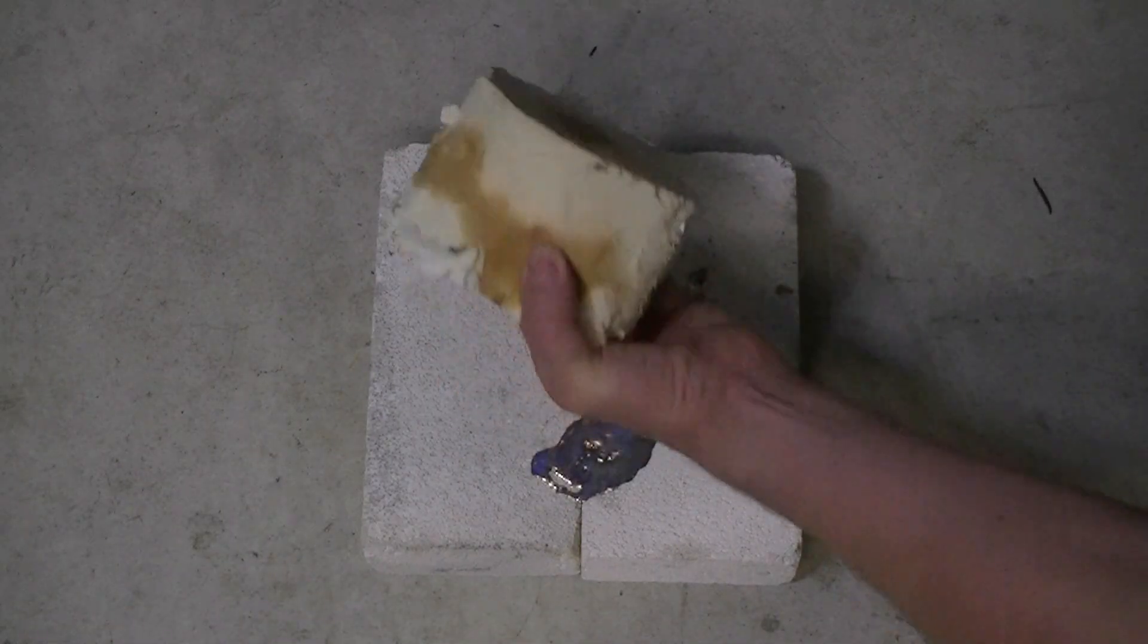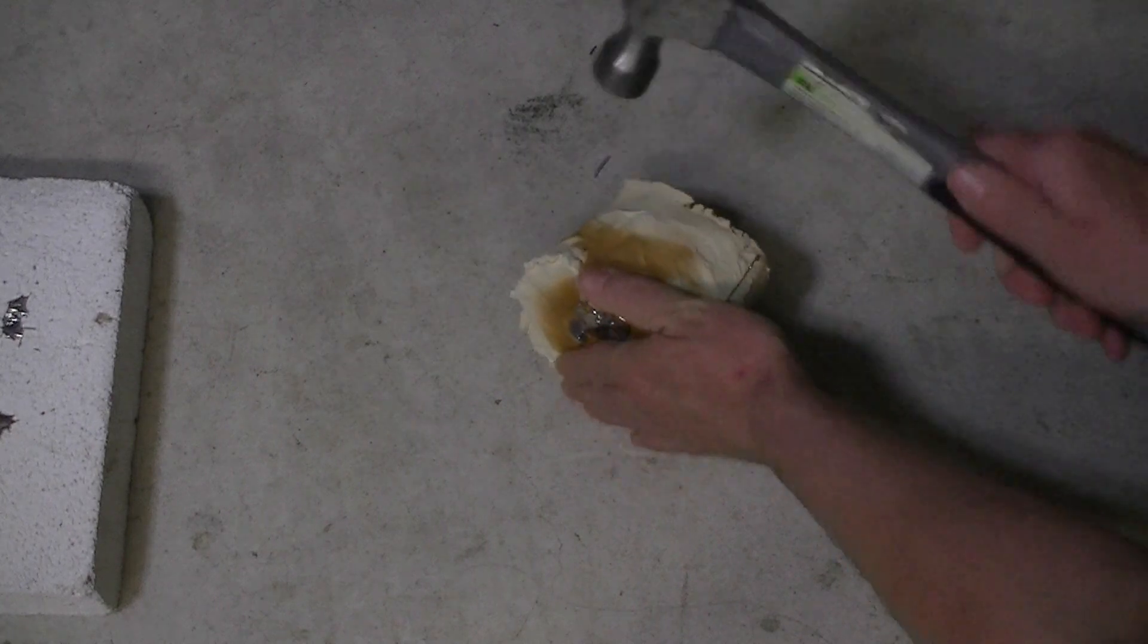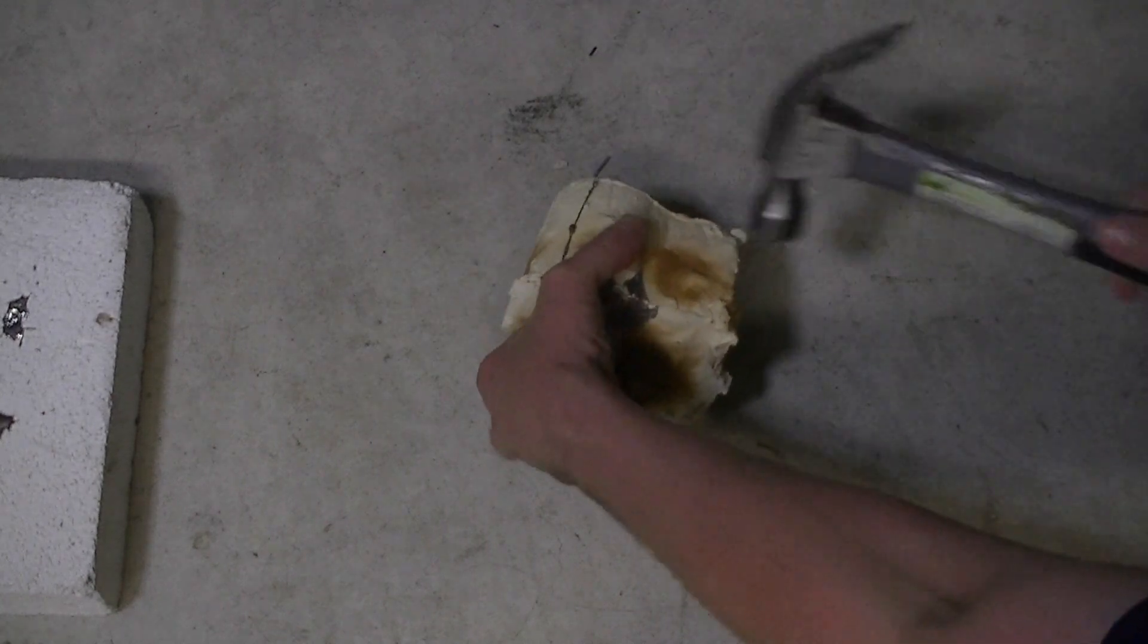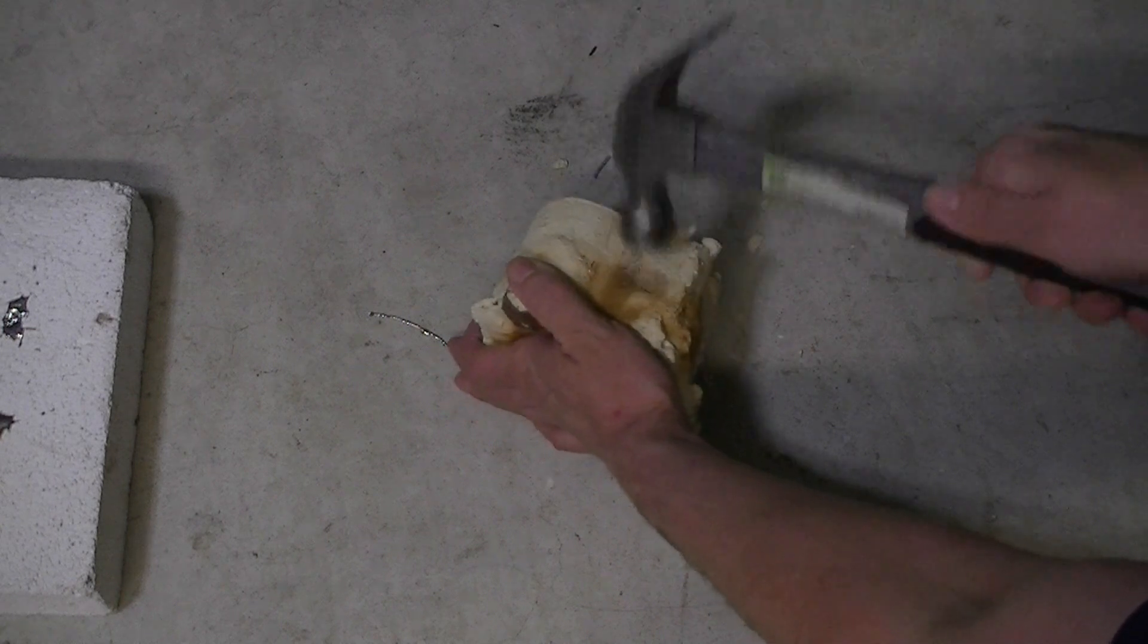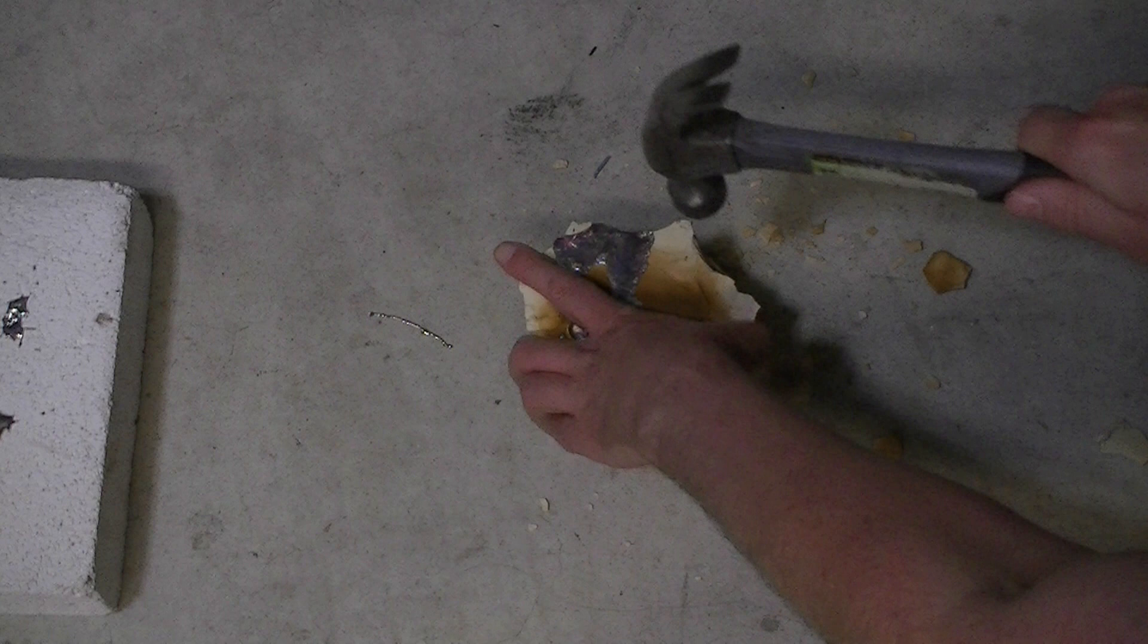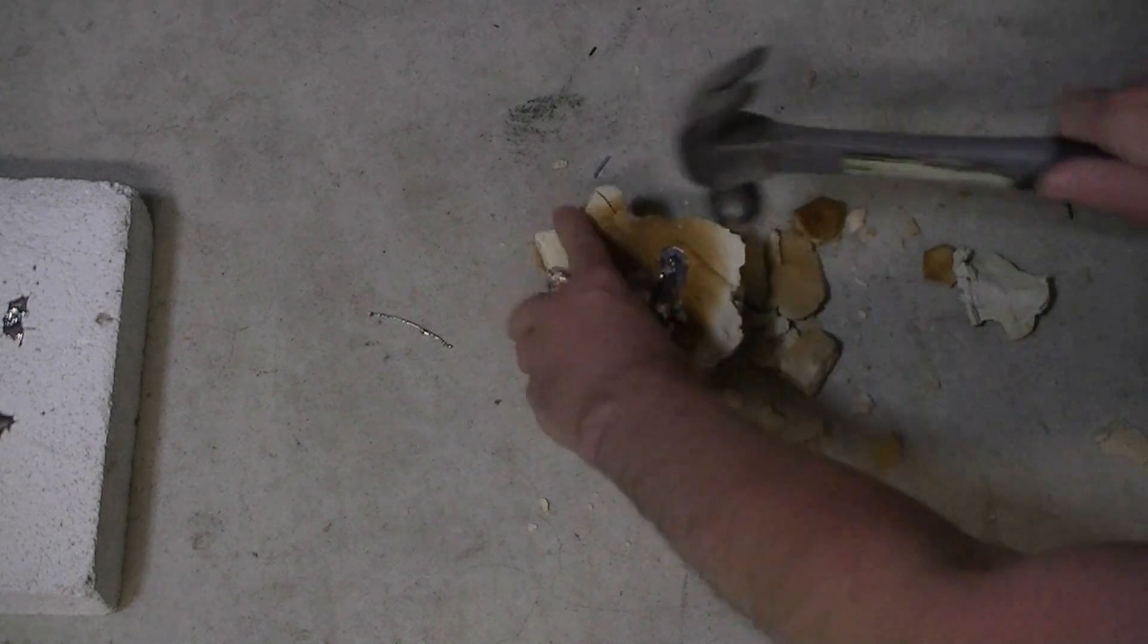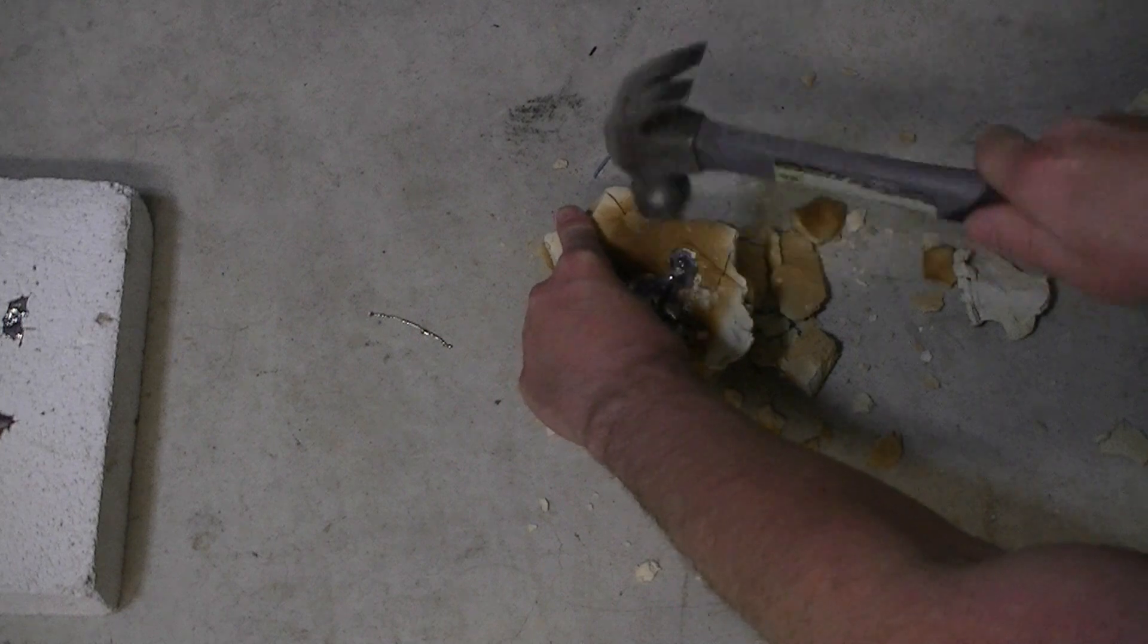After the molten bismuth has solidified and cooled down to room temperature, we can now knock the ceramic mold off the bismuth. In this case, we're using a hammer. Pure bismuth metal is a brittle material so we need to be gentle when we're tapping with our hammer not to fracture our bismuth.